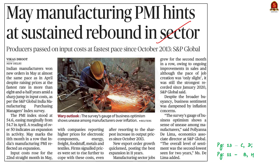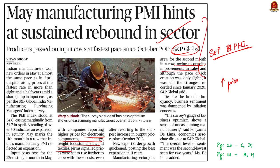The next article talks about the SNP Global India Manufacturing Purchasing Managers Index Survey. The survey says that for the 11th month in a row, India's manufacturing PMI reflected an expansion. Prices are already rising, and firms signaled further rise in prices due to increased input costs including electronic components, energy, freight, foodstuff, metals and textiles. The survey also noted that manufacturing sector jobs grew for the 2nd month in a row, owing to ongoing improvements in sales.